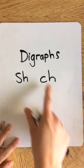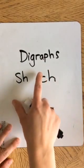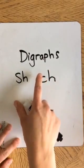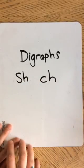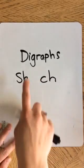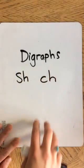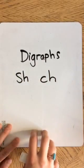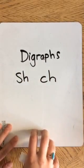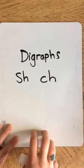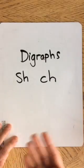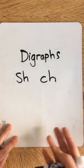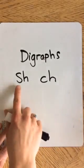Digraphs are two letters that represent one sound. So digraphs is just a fancy way of saying two letters that represent one sound. They can come at the beginning, the middle, or the end of a word.